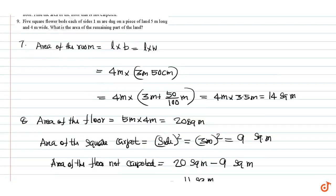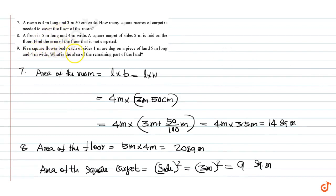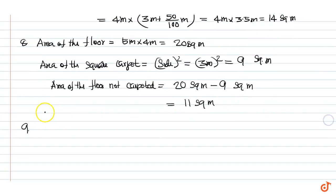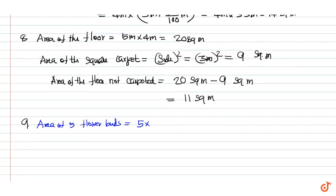Question 9: five square flower beds, each of side 1 meter, are dug on a piece of land 5 meters long and 4 meters wide. What is the area of the remaining part of the land? First we will find out the area of 5 flower beds. It is equal to 5 into side squared, equal to 5 into 1 meter squared, equal to 5 square meters.